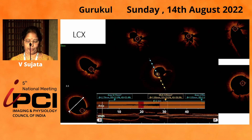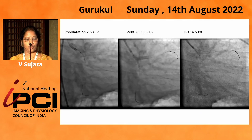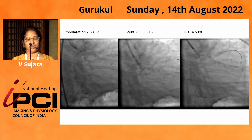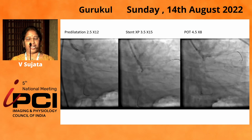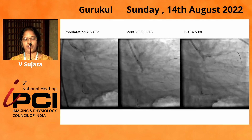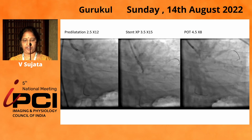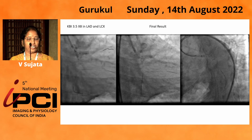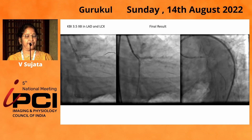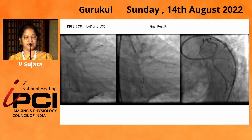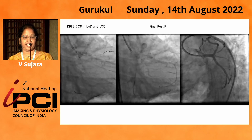We pre-dilated with a 2.5x15x12, and also dilated with a 3.5x8 balloon. We then stented with a 3.5x15 and did a POT with a 4.5x8. We then went into the LAD, crossed the struts into the LAD, and performed kissing balloon inflation with a 3.5x8 in both LAD and LCX.